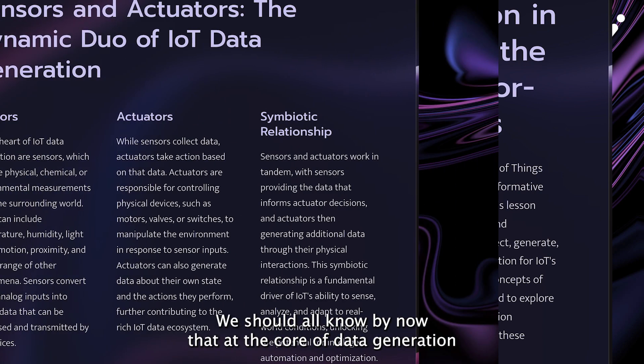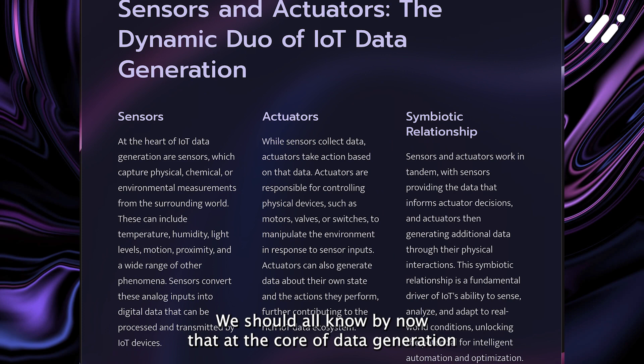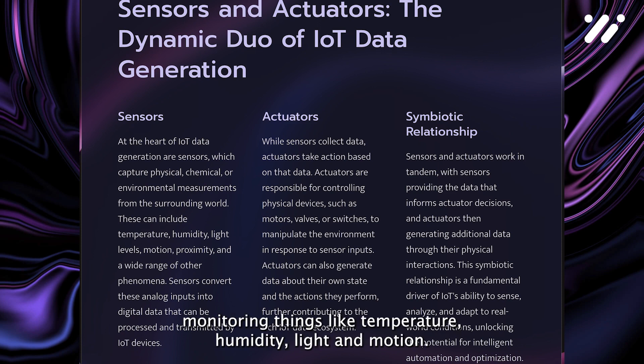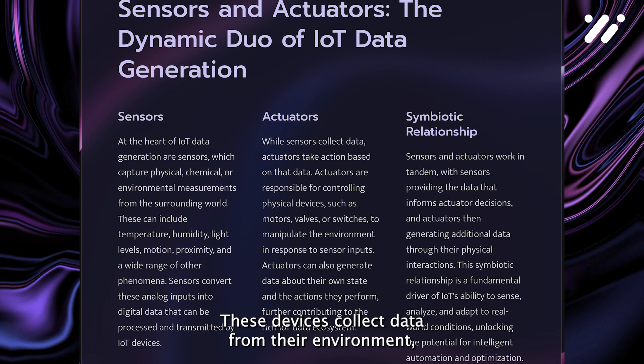At the core of data generation in IoT are sensors and actuators. Sensors are everywhere, monitoring things like temperature, humidity, light, and motion. These devices collect data from their environment, turning physical phenomena into digital signals.